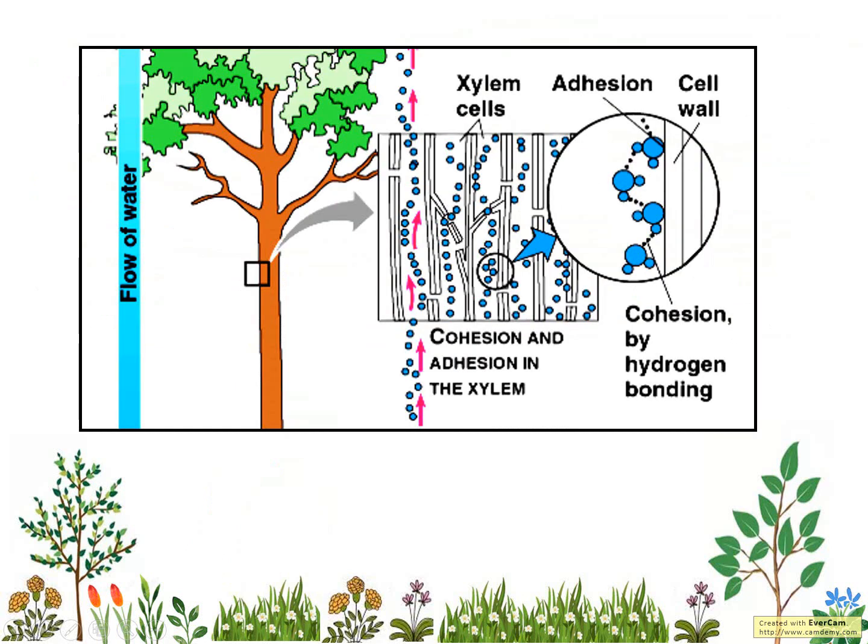This picture shows how water is transported in the xylem. After water is taken up by the root, it will be carried by the xylem. The factors that allow water to flow up through the xylem are cohesion and adhesion. The force that draws water up through the leaves is transpiration.